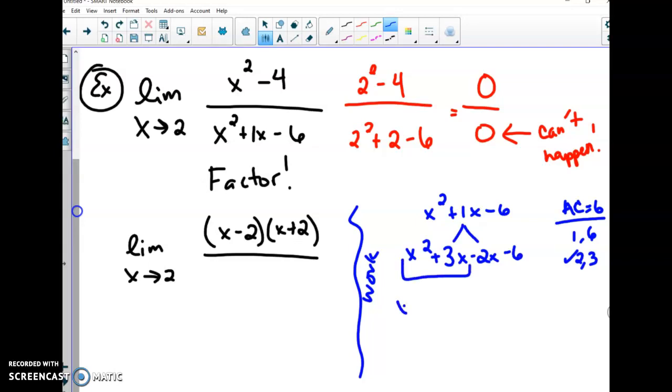I group factor, pull out the common factorization there. That gives me the x, and I'm left with x plus 3. On the last grouping, I have negative 2, x plus 3. So my factorization for the denominator is x plus 3, x minus 2.